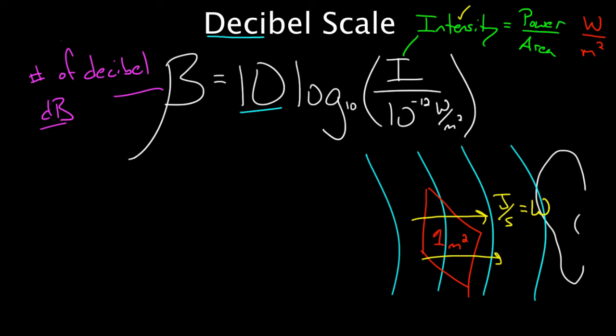And this part of the equation is my favorite. This is my all-time favorite right here. This number, this 10 to the negative 12 watts per square meter represents the threshold of human hearing. And what that means is this is the softest possible sound you can hear. Any sound with an intensity less than that, you won't even notice.